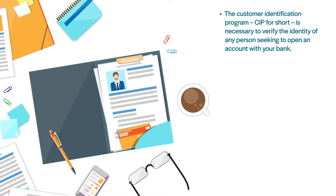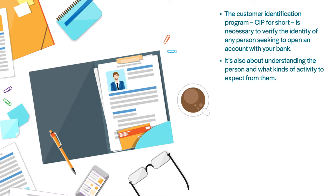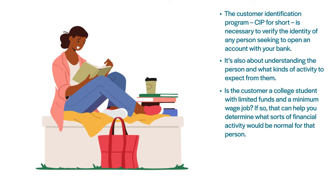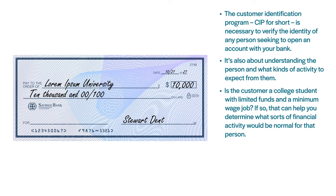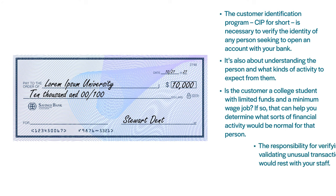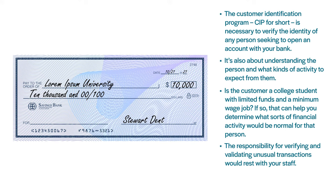The Customer Identification Program, or CIP, is necessary to verify the identity of any person seeking to open an account with your bank. This means not only acquiring different pieces of information such as the person's name, date of birth, address, and identification number, but also understanding the person and what kinds of activity to expect from them. For example, a college student with limited funds and a minimum wage job helps determine what financial activity would be normal in terms of deposits, transactions, and lending. A check for $10,000 may be suspicious, or it might be tuition payment, so the responsibility for verifying unusual transactions rests with your staff.